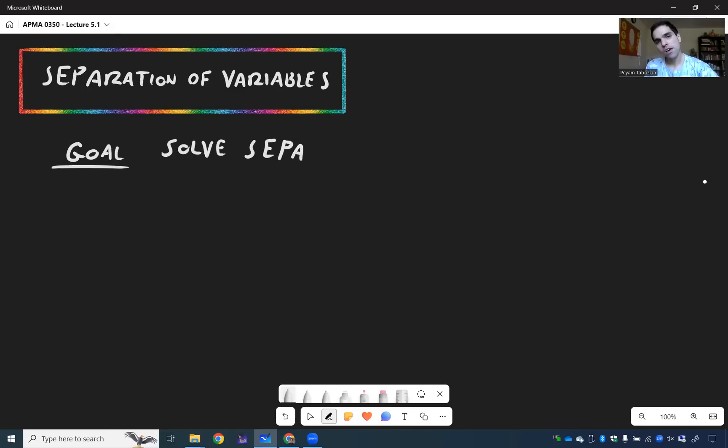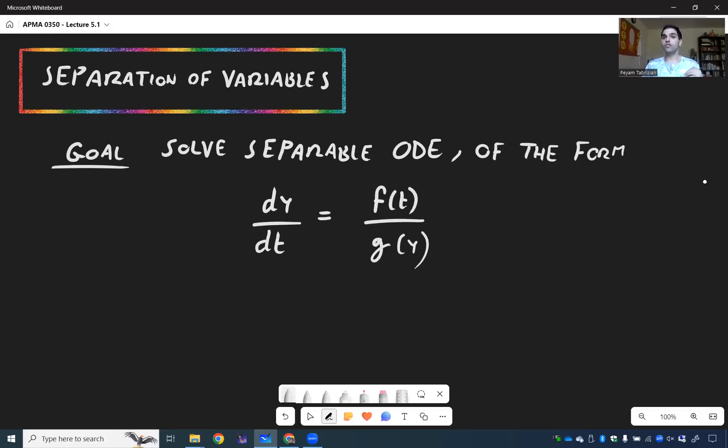ODEs, which are just ODEs of the form dy/dt equals f(t) over g(y). So a function of t divided by a function of y.